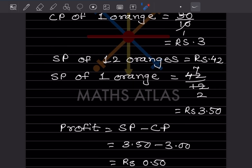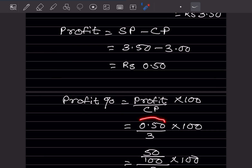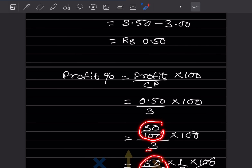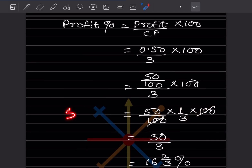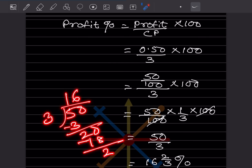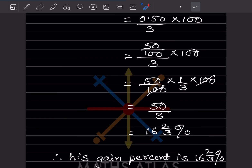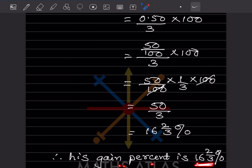Divided by CP which is 3, into 100. To simplify: 0.50 is 50/100, so we get 50 over 3 into 100, divided by 3 into 100. The two 100s cancel, leaving 50 divided by 3. That gives 16 with remainder 2, so the answer is 16 integers 2/3 percent. The gain percentage is 16⅔ percent.